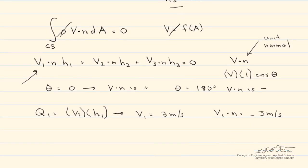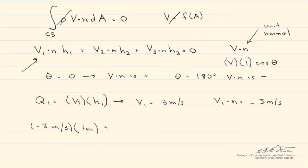Let's put our numbers in. V1·n is -3 meters per second times H1, which is 1 meter. We add V2·n, which is positive 4 meters per second, times 1.5 meters. And we add V3·n times H3, which is 2 meters. That equals 0.